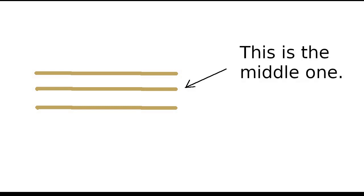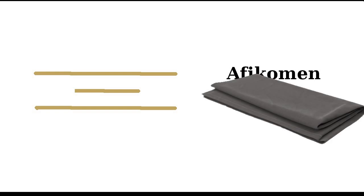Now, remember that stack of three matzot? Take the middle one out and break it in half. Half of this will become the afikomen. That gets wrapped in a napkin. Return the other half to the middle of the stack.